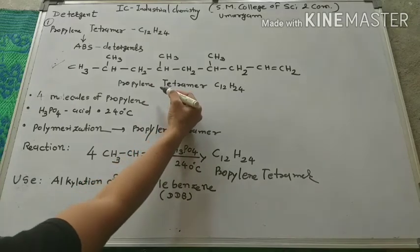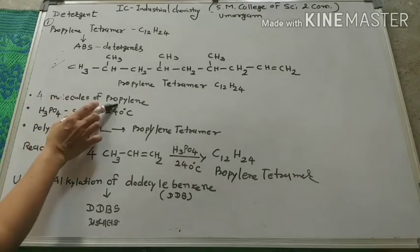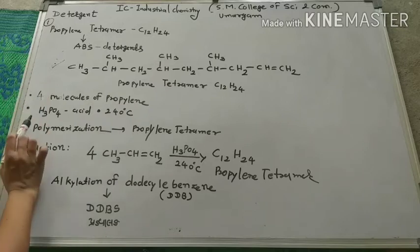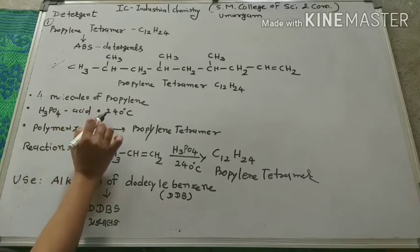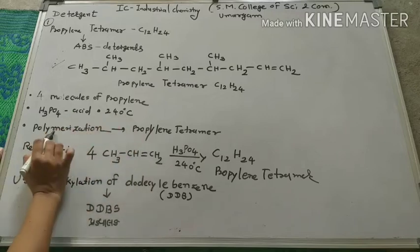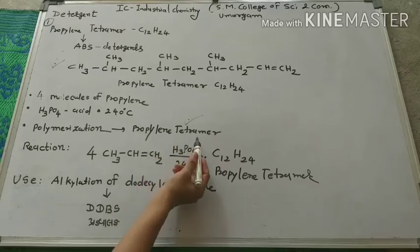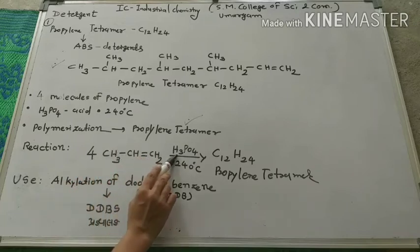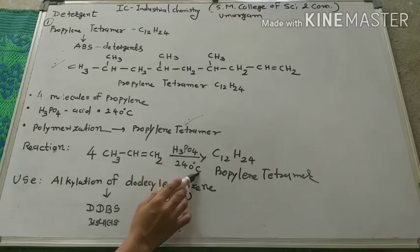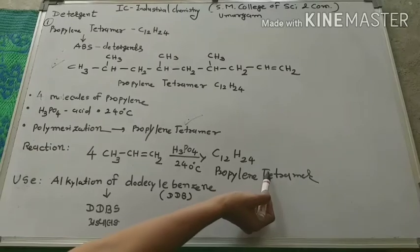How to prepare propylene tetramer: four molecules of propylene are taken, including H3PO4 phosphoric acid as catalyst. Both react with each other at 240 degrees Celsius temperature, giving polymerization and the final compound polypropylene tetramer. Four molecules of propylene with H3PO4 catalyst at 240 degrees Celsius undergo polymerization to give polypropylene tetramer.